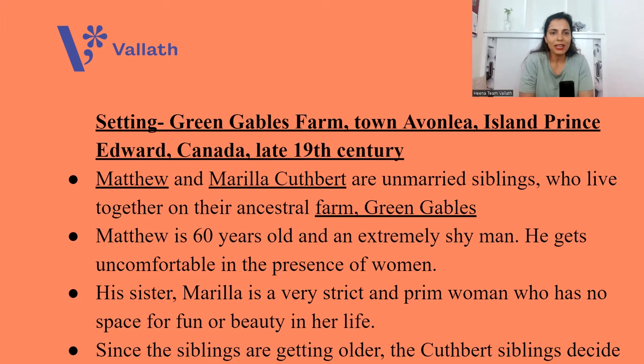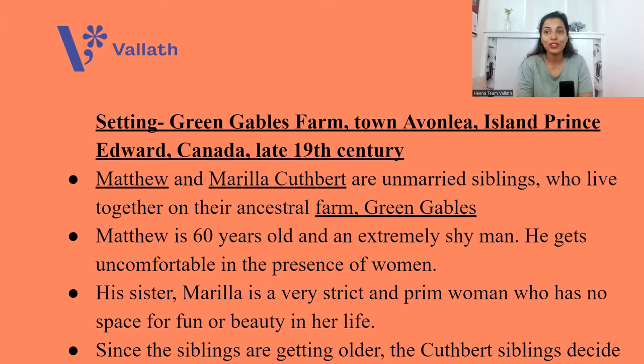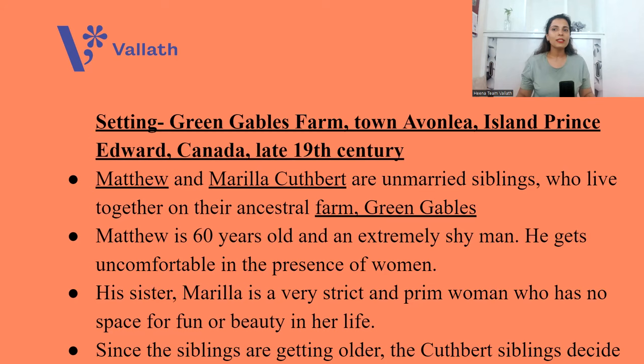Now meet the two very important people in the novel — they are siblings, brother and sister. Matthew Cuthbert and Marilla Cuthbert are unmarried siblings who live together on their ancestral farm called Green Gables. Matthew is 60 years old and an extremely shy man who gets uncomfortable in the presence of women. His sister Marilla is a very strict and prim woman who has no space for fun, beauty, or travel in her life.